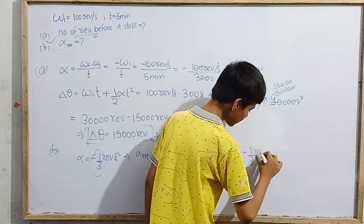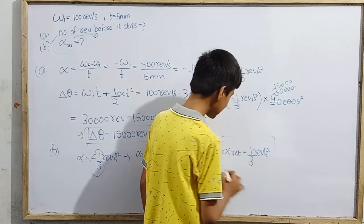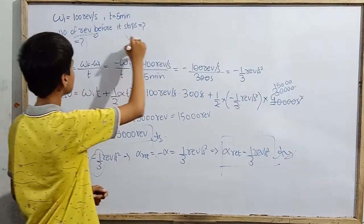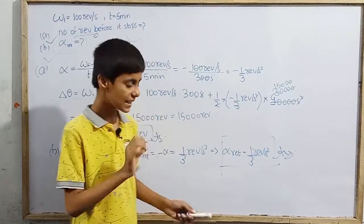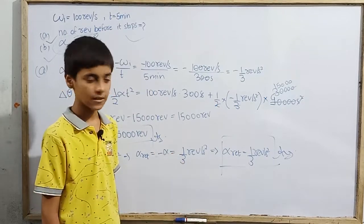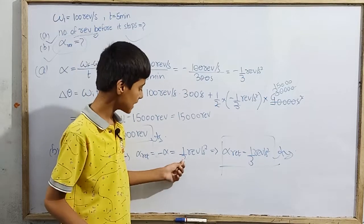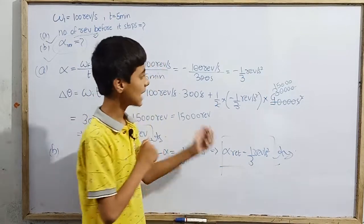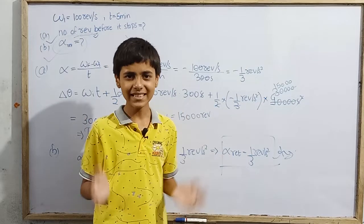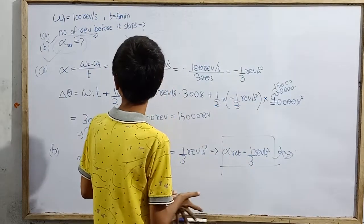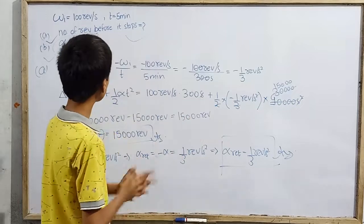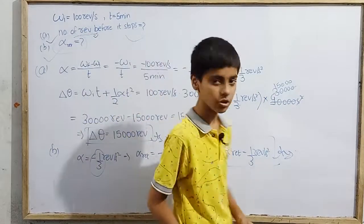Retardation is positive. Retardation means that speed will decrease. Angular retardation is positive here. When angular acceleration is positive and omega is positive, speed is increasing; when angular acceleration is negative, speed is decreasing. This depends on the directions of omega and the other quantities. We assumed the fan is rotating counter-clockwise — that is how we solved this entire problem.